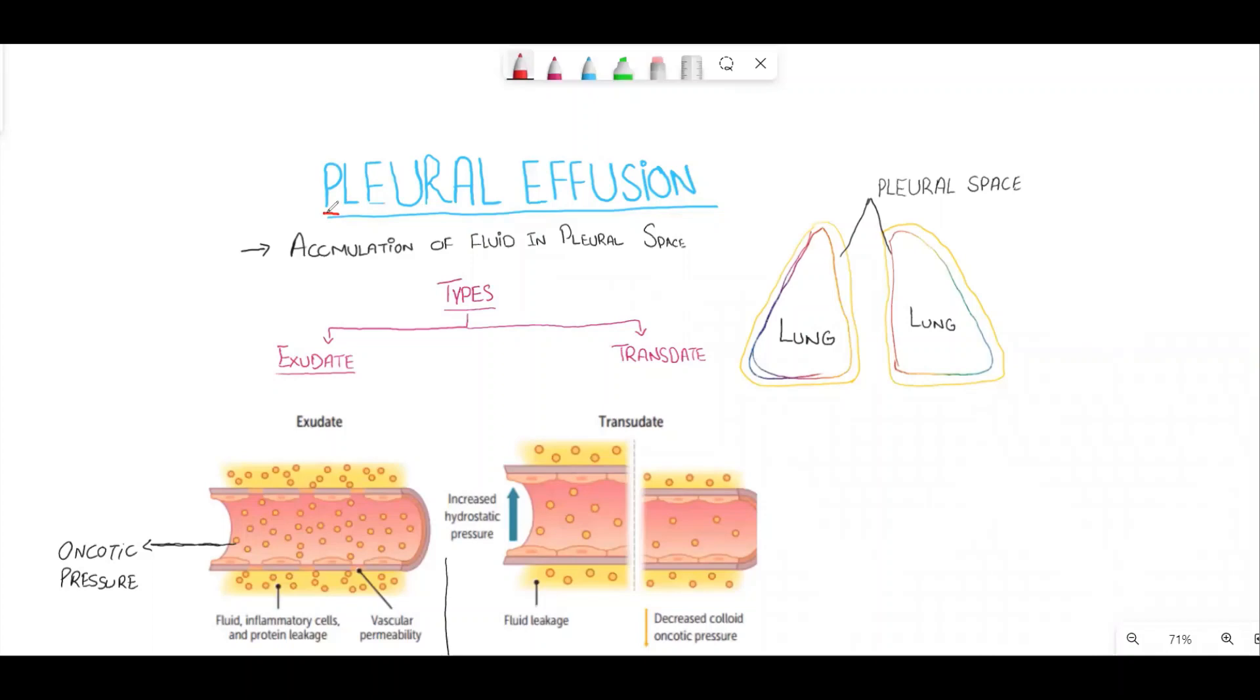The pleural effusion is basically the accumulation of fluid inside the pleural space, that is, space outside the lung. The pleural effusion is divided into two types: exudate and transudate.